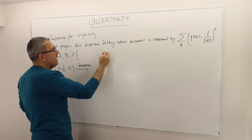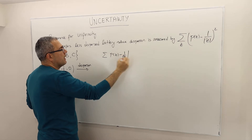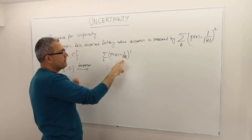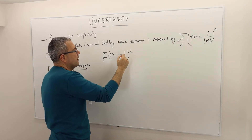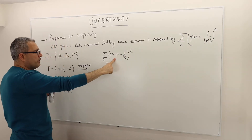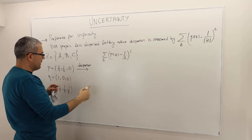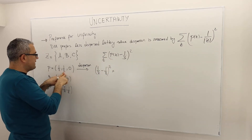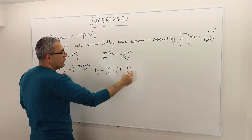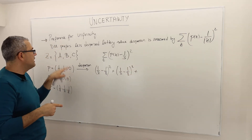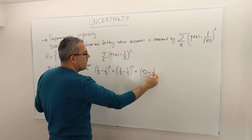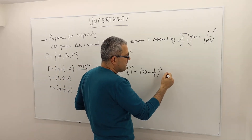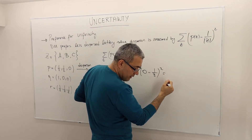The dispersion formula is: sum over Z of (P(Z) minus 1/|Z|) squared. Here, the number of alternatives in my outcome set Z is 3, so 1/3 for all of them. For lottery one (P = 1/2, 1/2, 0): the probability of A is 1/2 minus 1/3 squared, plus B which is also 1/2 minus 1/3 squared, plus C which is 0 minus 1/3 squared. If you do the math, that comes out to 3/18.